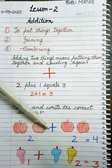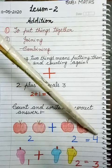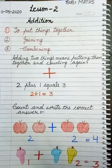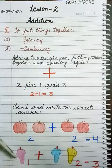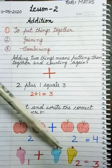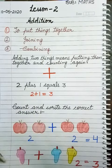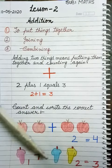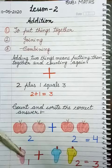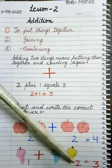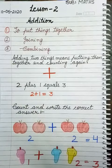Means 2 plus 2 equal to 4. Now here how many ice cream? 1. And here 1, 2. Let's count. 1, 2, 3. Means 1 plus 2 equals 3.